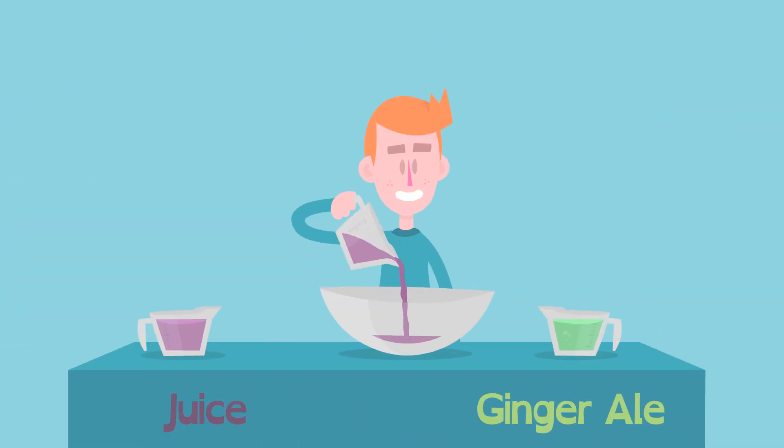Meet Carl. He's mixing punch for a party. The recipe calls for 2 cups of juice for every cup of ginger ale.